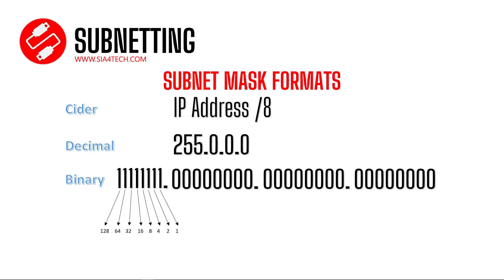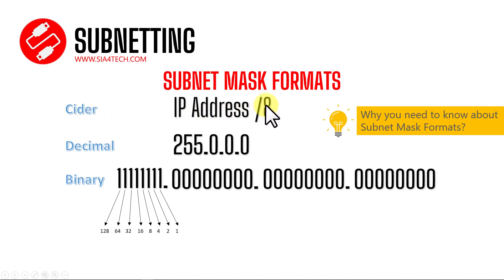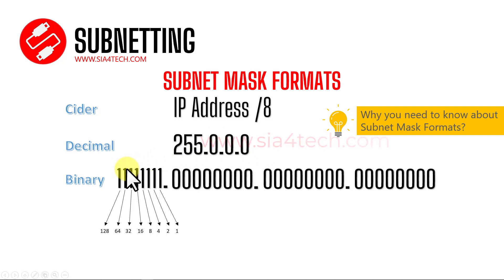Before we get started, I would like to show you the different types of subnet mask. The reason is we solve all questions related to subnetting using subnet mask, so subnet mask is the key to find the answer for any subnetting question. The first type is CIDR notation, or sometimes called shorthand — it is an IP address followed by a slash and a number called the CIDR. The second type is decimal, which is very common: 255.255.something. The third type is binary, written as ones and zeros.